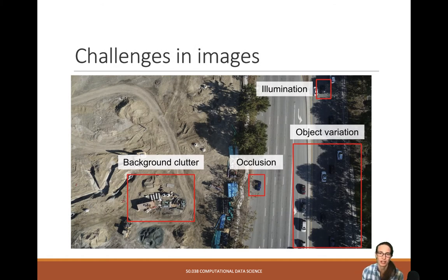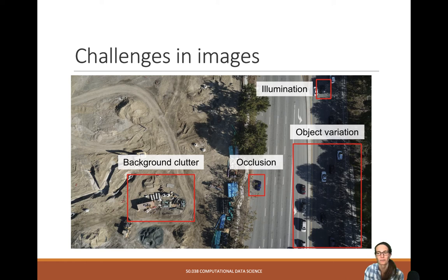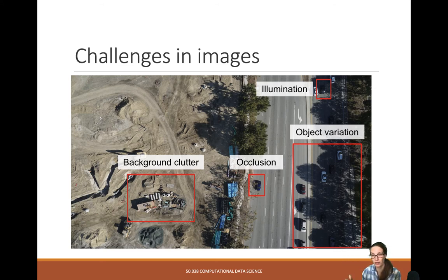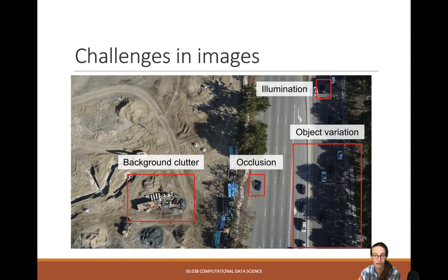There are a bunch of challenges in images. In self-driving vehicles, for example, a photo of a street can look many different ways — there could be a lot of object variation. It's raining, it's light, the sun is shining, it's cloudy, there's tree shade covering the image. They can have different types of illumination. There can be an object half in front of another object, and there can be a bunch of background clutter. These are just some examples of the challenges in images.